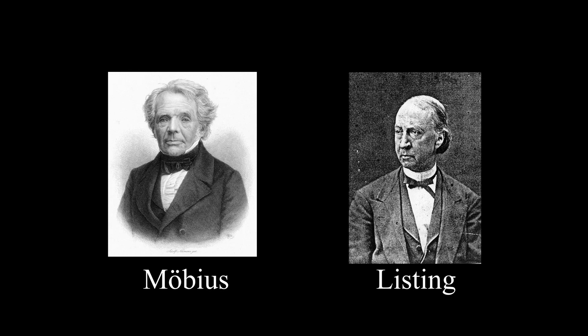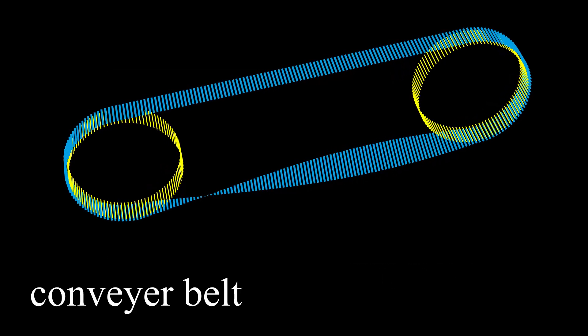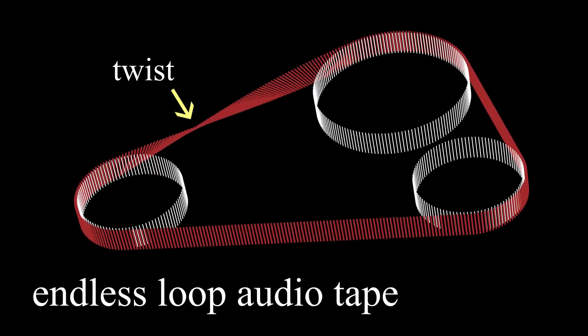The Mobius strip was discovered by German mathematicians Mobius and Listing in the mid 19th century. The Mobius strip is used as a conveyor belt that endures longer than other belts because it wears evenly. It is also used as a sound recording tape to double the playing time.